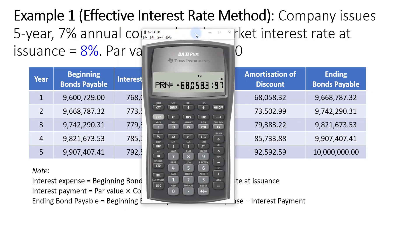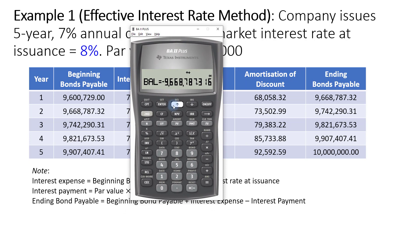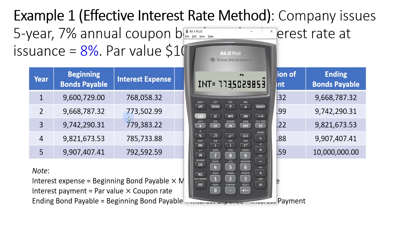If you need to look at the balance at the end of year 2, just change P1 to 2 and P2 to 2. The balance, as you can see, is $9.742 million. The principal discount amount is $73,503, and the interest expense is $773,503. This function is very useful — once you understand how the calculation works, using the calculator makes the computation more efficient.